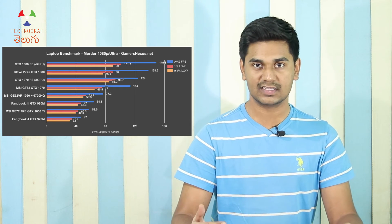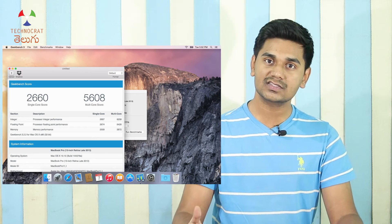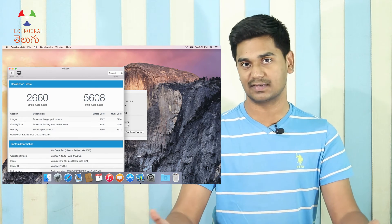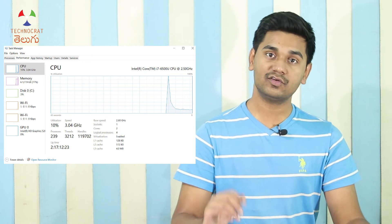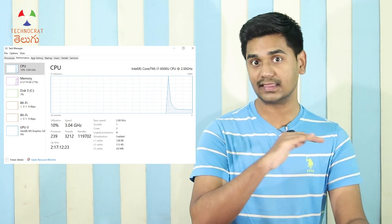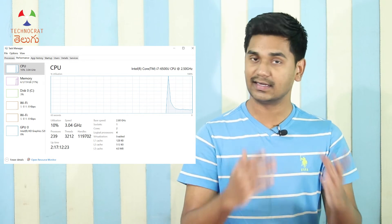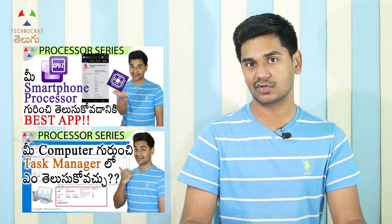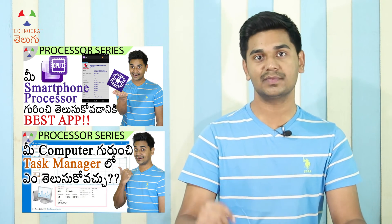To truly compare laptops, run real-world benchmark tests. You can check individual core clock speeds using CPU-Z or CPU-X apps on Android and iOS. Day-to-day tasks rely on base clock speed, but overall performance involves much more than just clock speed.